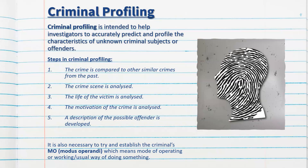Criminal profiling is intended to help investigators accurately predict and profile the characteristics of unknown criminal subjects or offenders. This is typically done at actual crime scenes, which are extensively photographed and examined. Criminal profilers, along with criminal psychologists and the police, will try to create a profile of the likely criminal responsible.